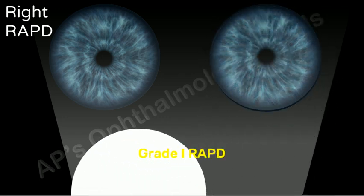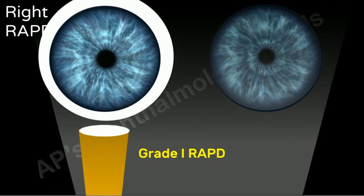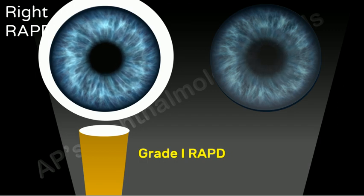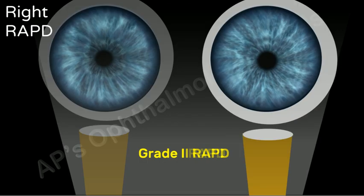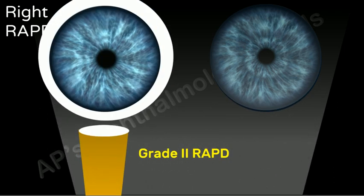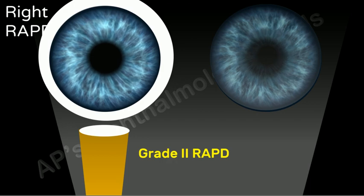In grade 1 RAPD, there is a weak initial constriction and greater redilatation. In grade 2 RAPD, there is an initial stall and greater redilatation.